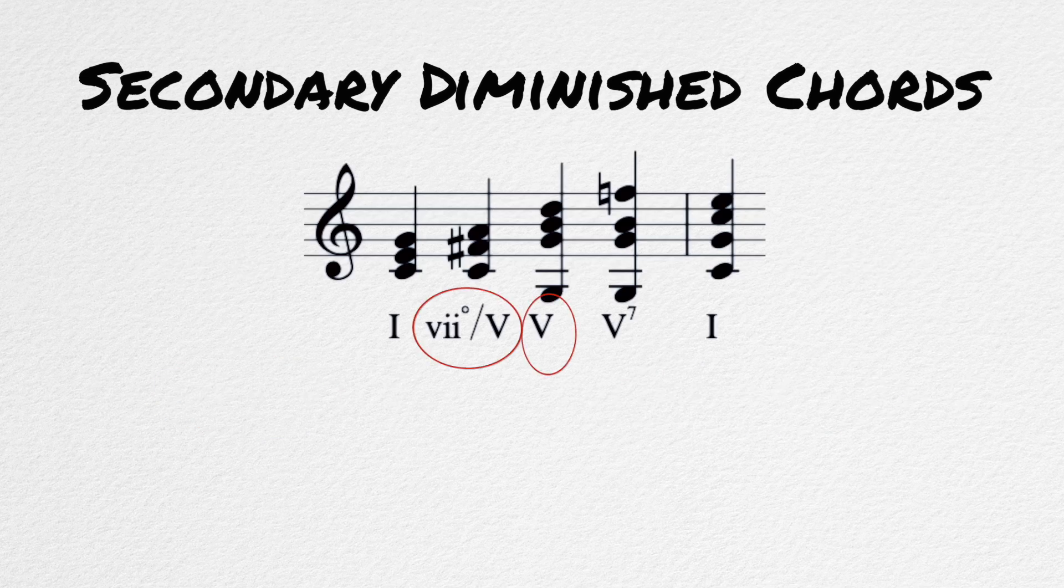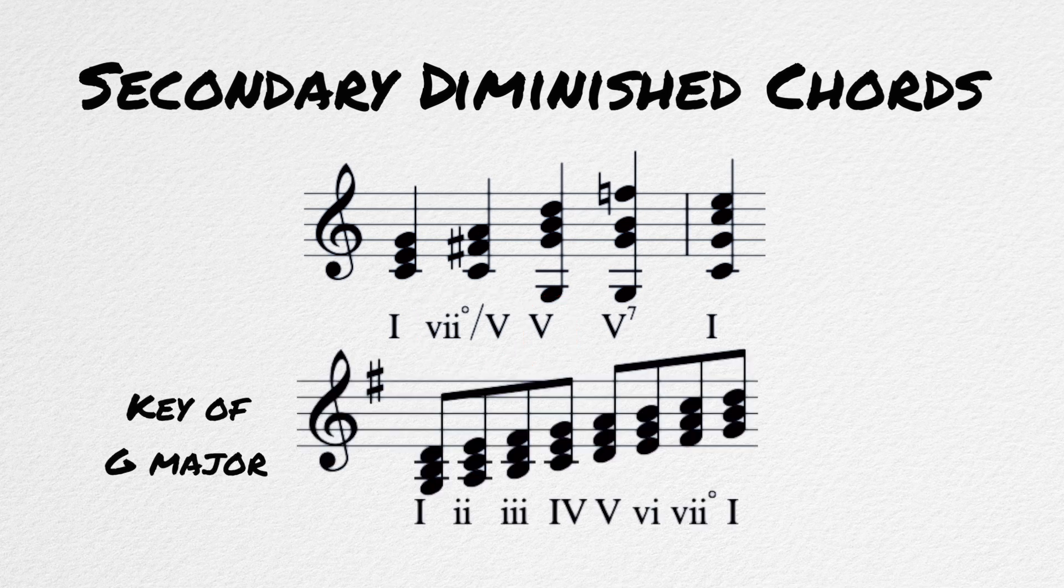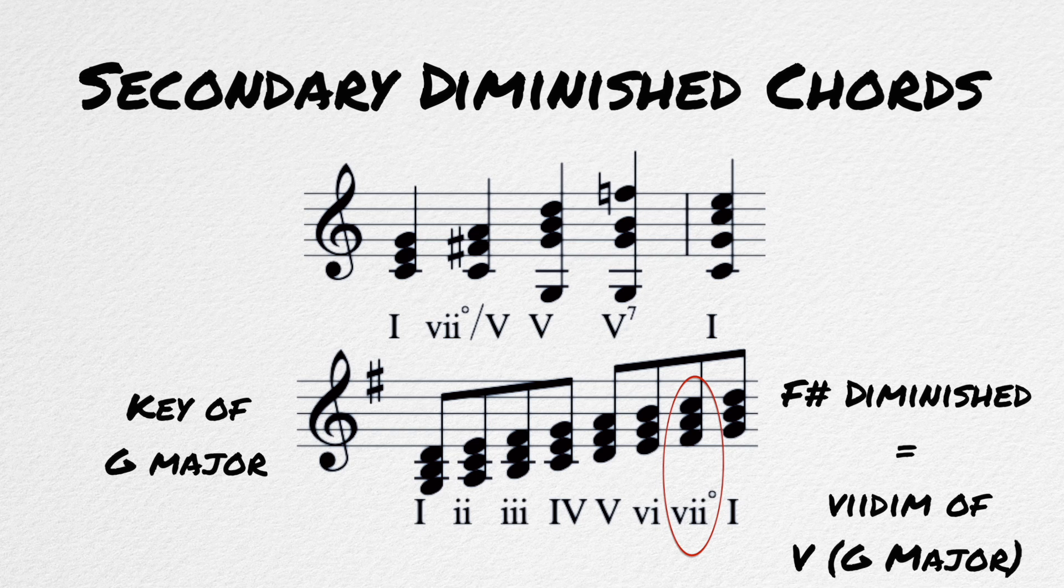For example, let's try the VII diminished of V in the key of C. We're going to emphasize that G major, which is the dominant. We pretend we're in G major for a moment, and then find the VII diminished chord in that key, which would be an F sharp diminished chord. Again, this can be used for any chord in the key other than the diminished chord. Resolving one diminished chord to another is going to sound dissonant.